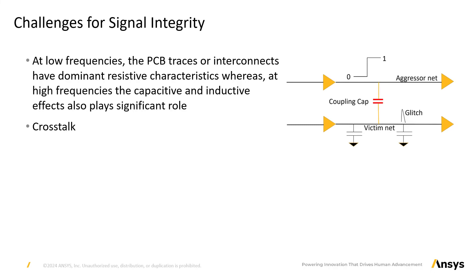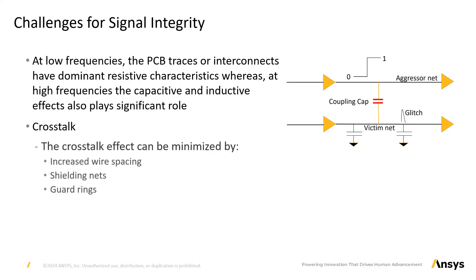Now let's understand the challenges in maintaining signal integrity. Crosstalk: this occurs when a signal transmitted from one channel causes an undesirable effect on another channel. It is usually caused by capacitive coupling between two channels. A capacitor resists the change of voltage across it, so if the aggressor wire is transitioning from 0 to 1 or 1 to 0, the victim wire also tries to follow the same trend due to capacitive coupling. The effect of crosstalk is noise on non-switching wires and increased delay on switching wires.